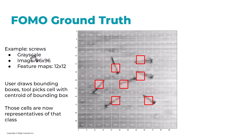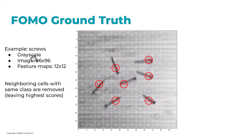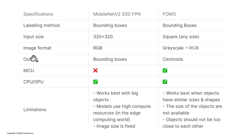Each grid cell is classified independently, giving us a segmentation map. In the post-processing step we get rid of cells with lower probabilities around the one with the highest probability, keeping only the most confident ones. This leads to another limitation we'll see shortly. From this we get our centroids — and that's how FOMO works.